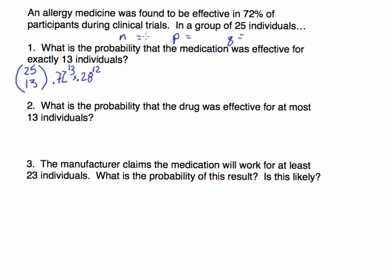N is the number of trials — the number of individuals we are sampling from. So in this case, our N is 25. P is the probability associated with a success. We're going to associate success with the drug being effective for an individual, so P is 0.72. Q is 1 minus P, so 1 minus 0.72 equals 0.28.